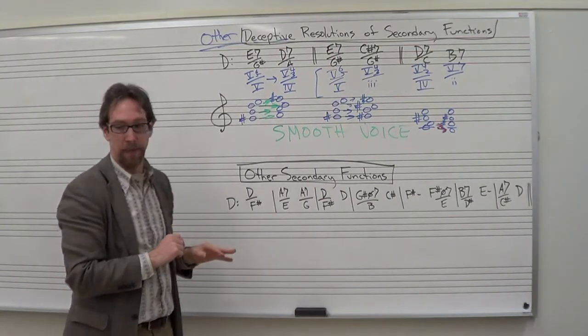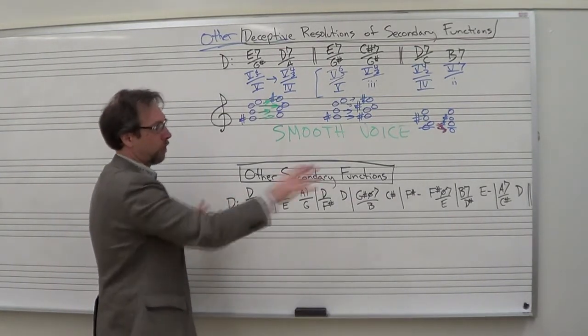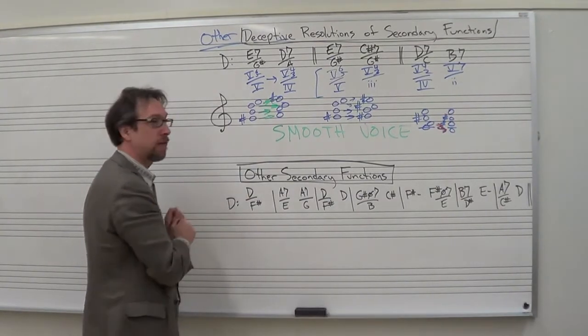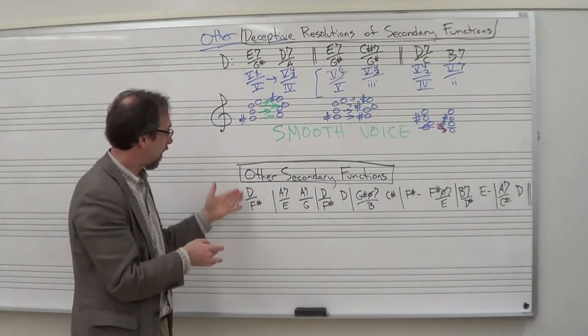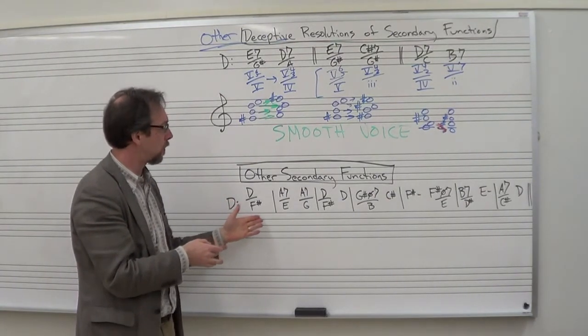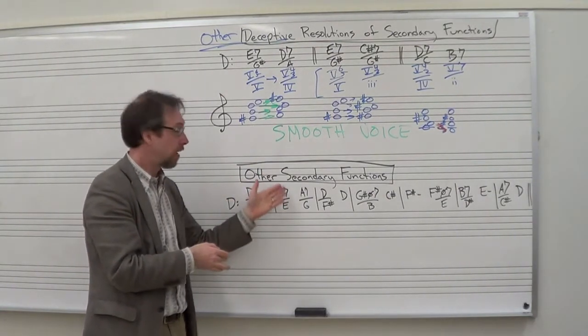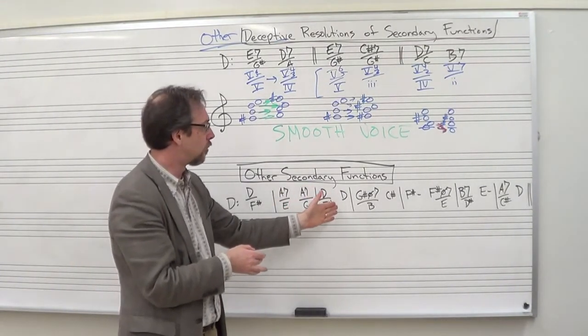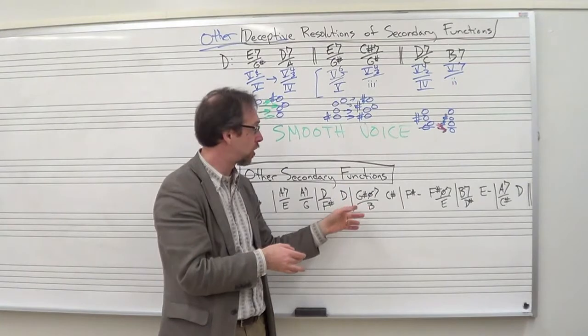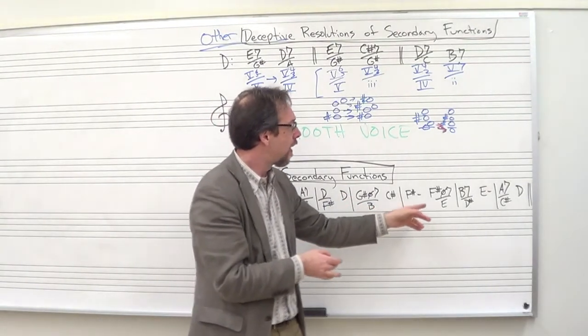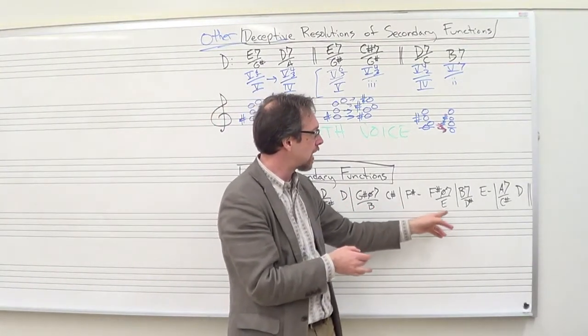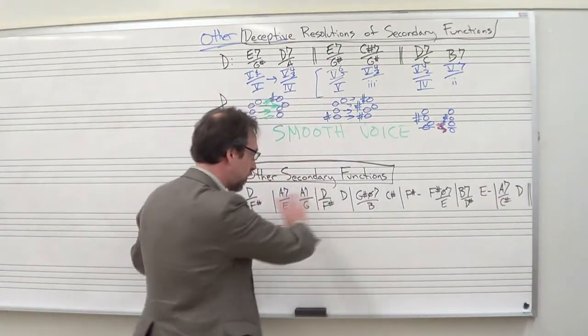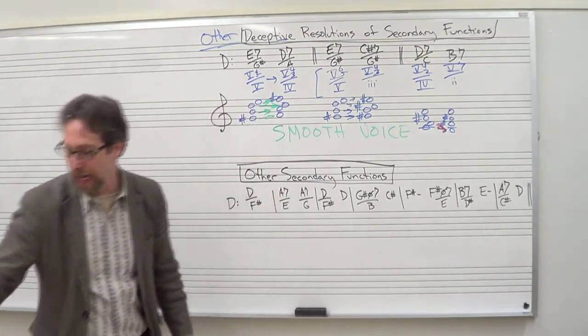Other secondary functions. Now, moving away from the deceptive stuff. What if we have this chord progression and I would ask you, please analyze. We're in the key of D major. I'm going to tell you that. I'm going to give you a little hint. We have a D major triad with F sharp in the base. A7 over E. A7 over G. D over F sharp to a D major triad root position. G sharp half diminished over B. C sharp major. F sharp minor. F sharp half diminished 7 over E. B7 over D. E minor. A7 over C sharp. D. This whole sequence here. How would you analyze it?